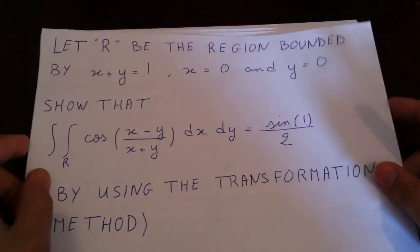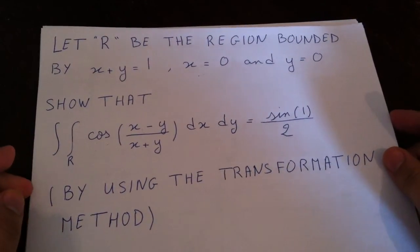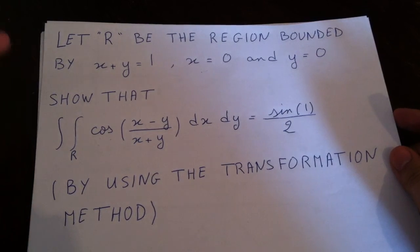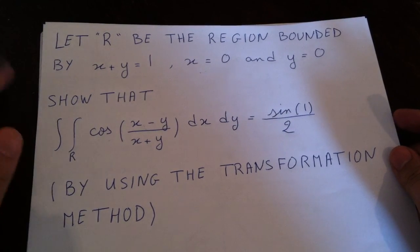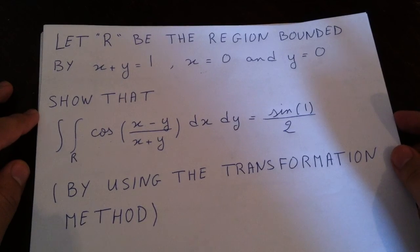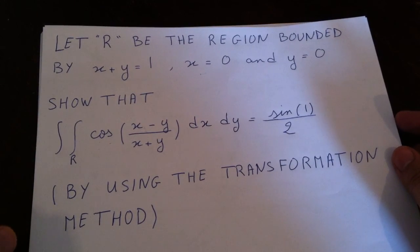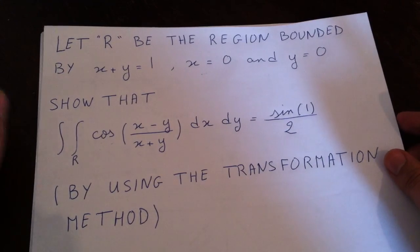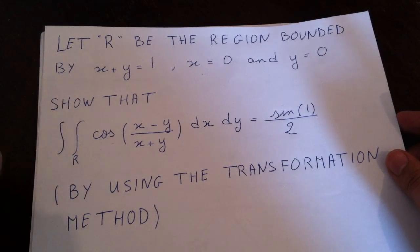Hello again, it's me. Thank you for watching the first part. I'm going to do the second part, so for people that didn't watch the first part, please check it. I'm just quickly saying the question here: let R be the region bounded by x plus y is equal to 1, x is equal to 0, and y is equal to 0.